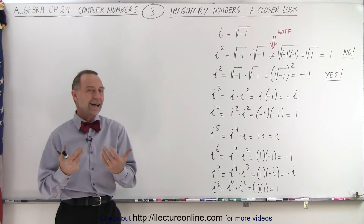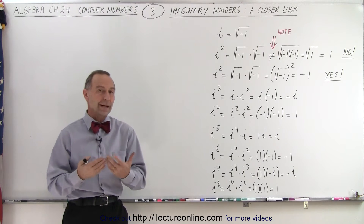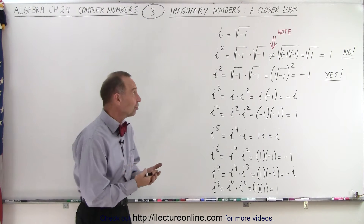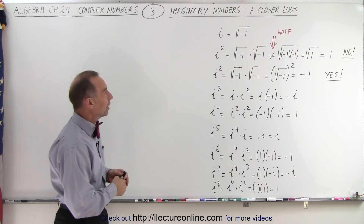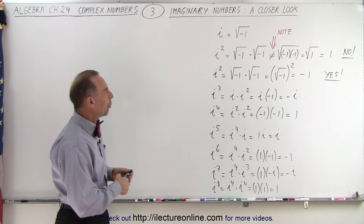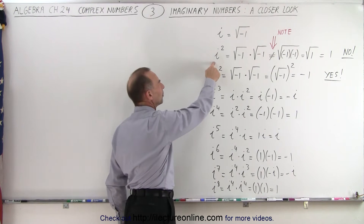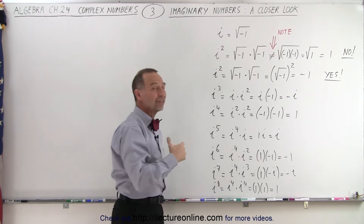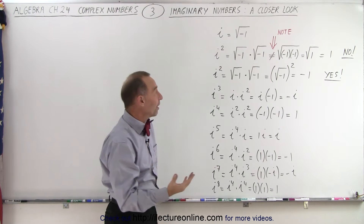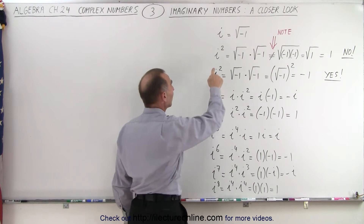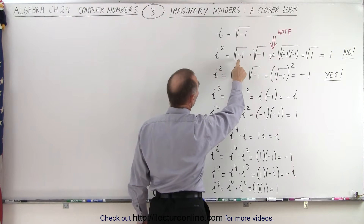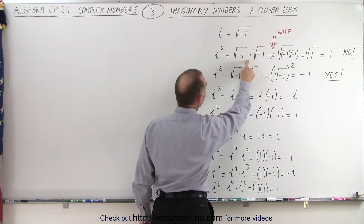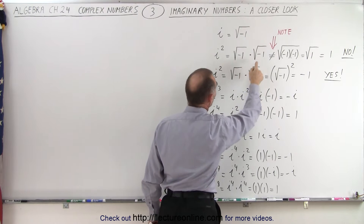That deals with the number i, which is, by definition, the square root of negative 1. But what does i squared then mean? Well, we're tempted to do the following: we know that i squared is simply i times i, which would be the square root of negative 1 times the square root of negative 1.